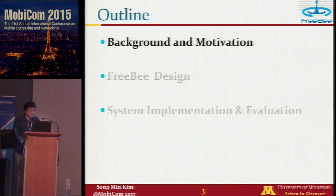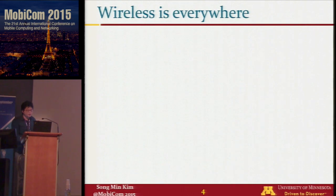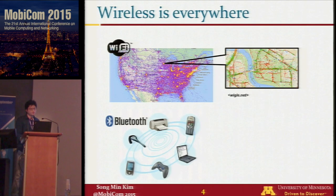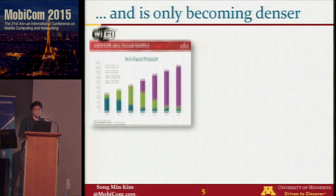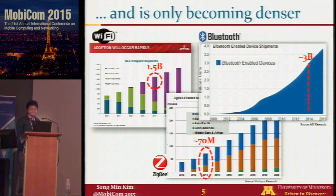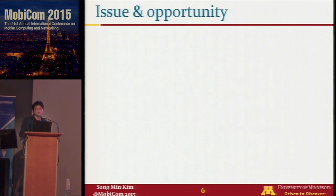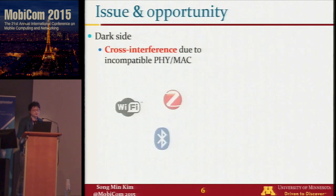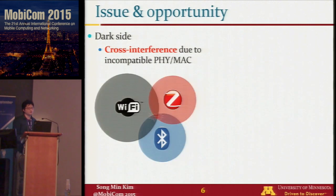The outline starts with background and motivation. Today wireless is virtually everywhere — for instance WiFi, Bluetooth, and ZigBee. Their popularity grows continuously with 1.5 billion WiFi devices, 70 million ZigBee devices, and 3 billion Bluetooth devices newly deployed last year.